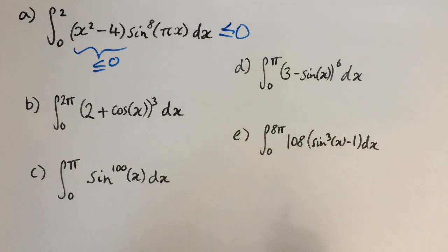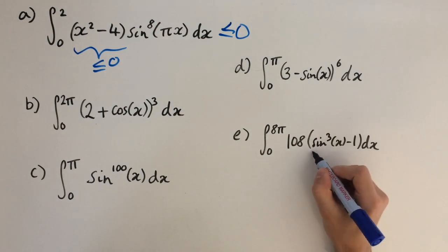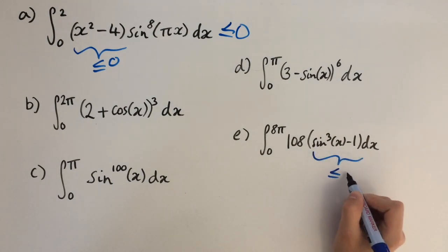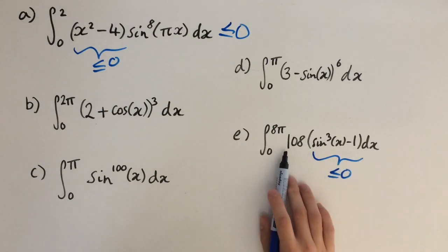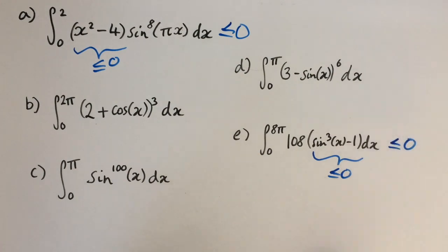Now let's look at e. It's a similar story. Sine cubed of x is between minus 1 and 1, so if we subtract 1, this is always going to be less than or equal to 0. So we know this bracket here is less than or equal to 0, and by multiplying by 108, that's still going to be negative. So we can deduce that this integral is also less than or equal to 0.